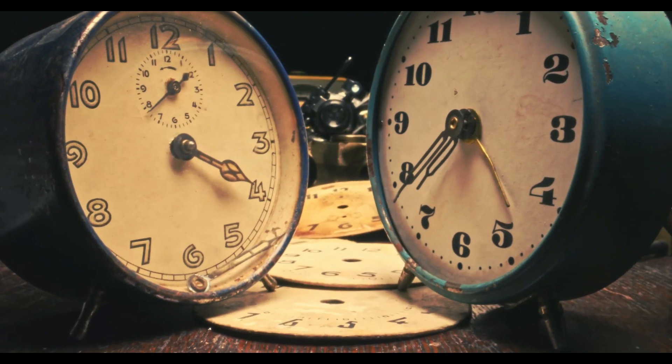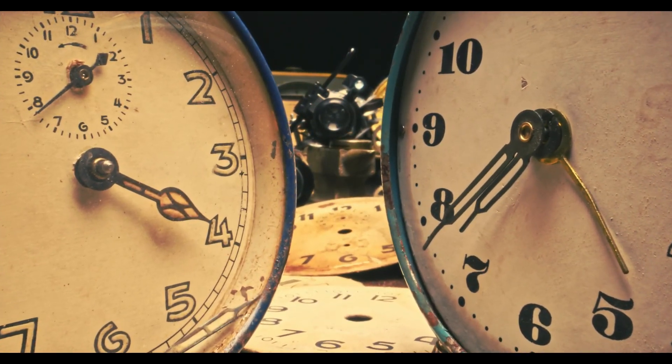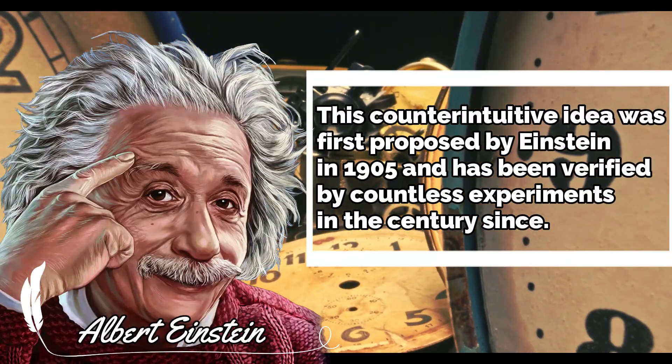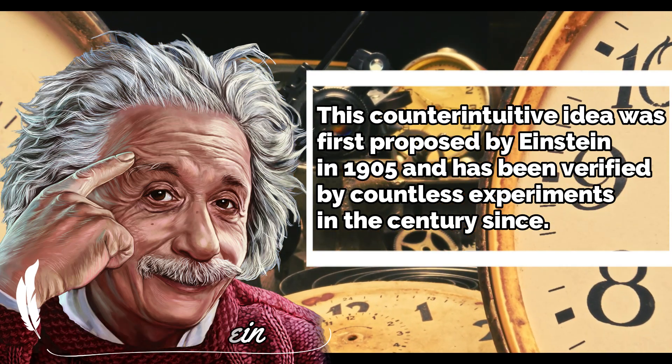For example, if you're moving close to the speed of light, time will appear to slow down for you. But from the perspective of someone stationary, your clocks will appear to be running slowly. This counterintuitive idea was first proposed by Einstein in 1905, and has been verified by countless experiments in the century since.